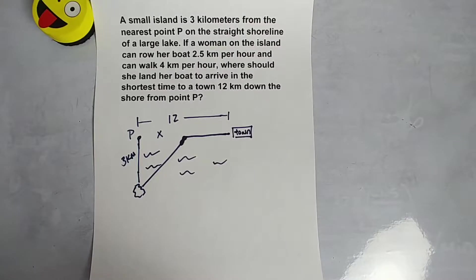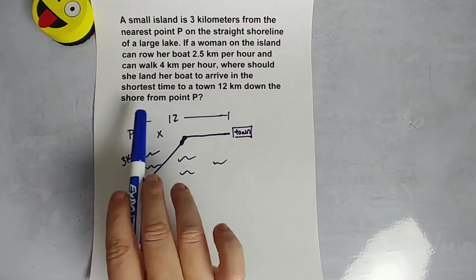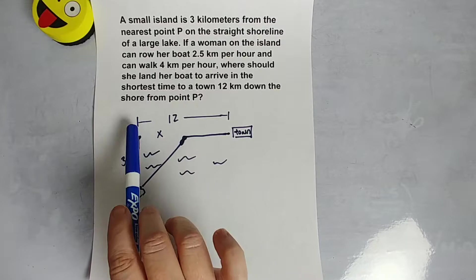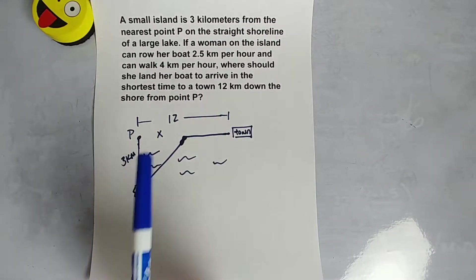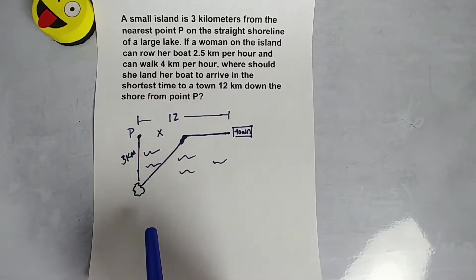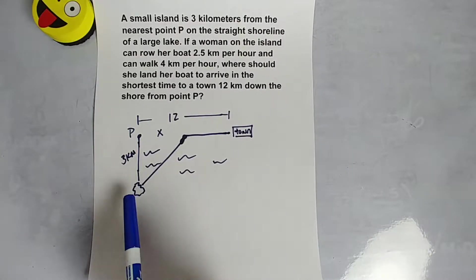Okay, so a small island is 3 kilometers from the nearest point P on the straight shoreline of a large lake. So here's P, this is the shoreline up here, this is water here, these are my weak attempt at waves. So the entire distance here is 12. We've got a woman on this island. But we've got a woman on an island that can row her boat at 2.5 kilometers per hour and she can walk at 4 kilometers per hour. So if she's on this island, we want to know where she should land her boat to arrive in the shortest time to a town that happens to be 12 kilometers down the shore from point P.